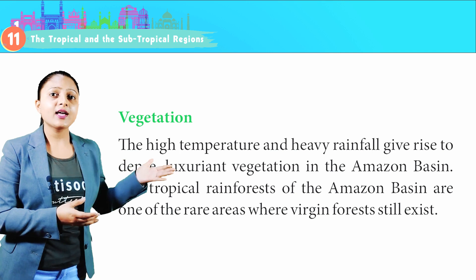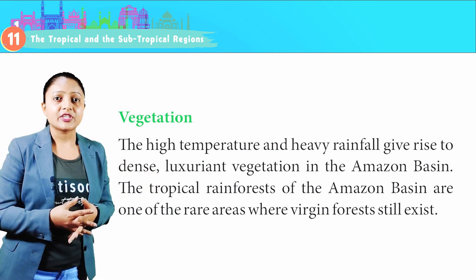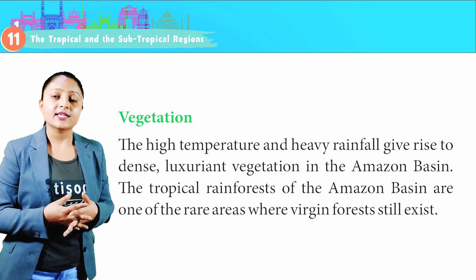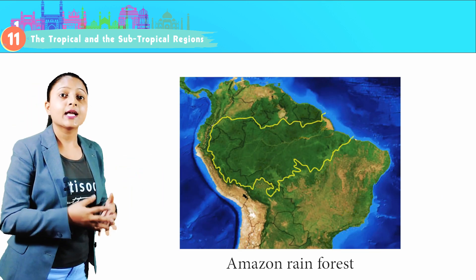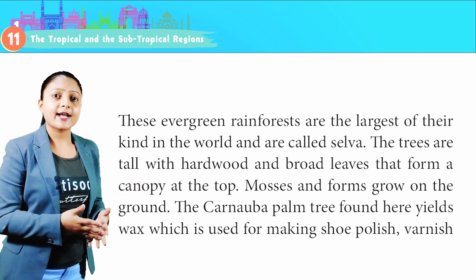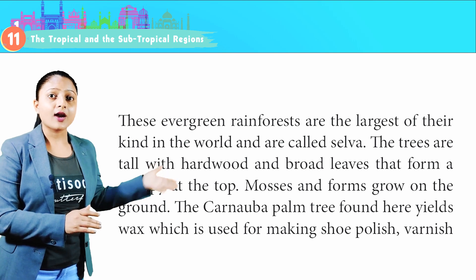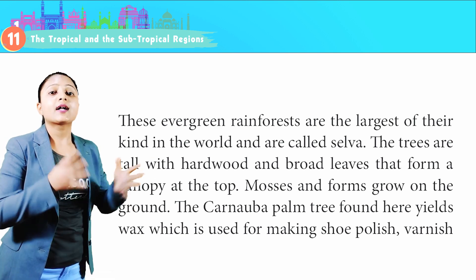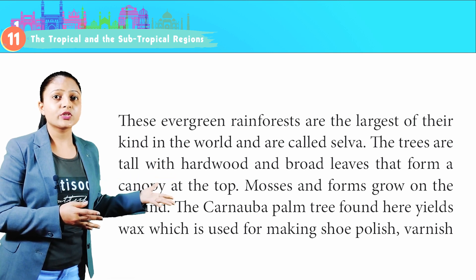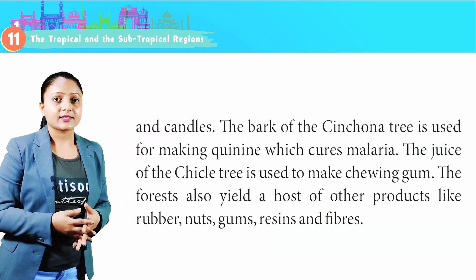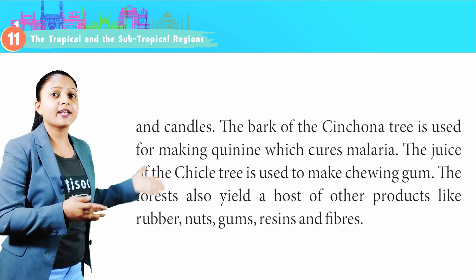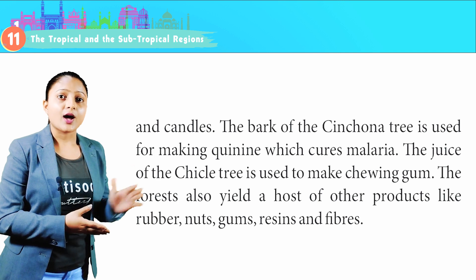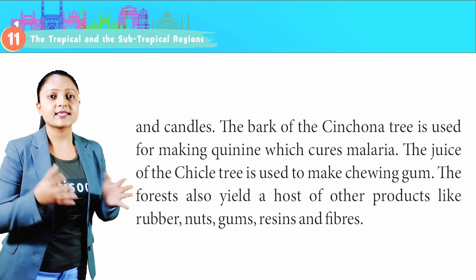Vegetation: The high temperature and heavy rainfall give rise to dense, luxuriant vegetation in the Amazon Basin. The tropical rainforests are one of the rare areas where virgin forests still exist. These evergreen rainforests are the largest of their kind in the world and are called Selva. The trees are tall with hardwood and broad leaves that form a canopy at the top. Mosses and ferns grow on the ground. The carnauba palm tree found here yields wax used for making shoe polish, varnish and candles. The bark of the cinchona tree is used for making quinine, which cures malaria. The juice of the chicle tree is used to make chewing gum. The forest also yields rubber, nuts, gums, raisins and fibres.